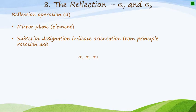Now let's have a look at the reflection. The reflection operation is given the Greek symbol sigma. The element is a mirror plane and the operation is a reflection. We have three different types of reflections that we can look at. The first one is called a sigma v, which is a vertical reflection, or a vertical mirror plane. The second one is called a sigma h, which is a horizontal one. Let me give you an example of what I'm talking about. So let's have a look at water.